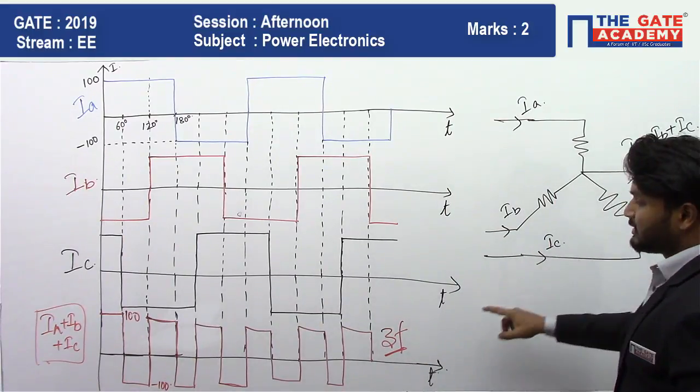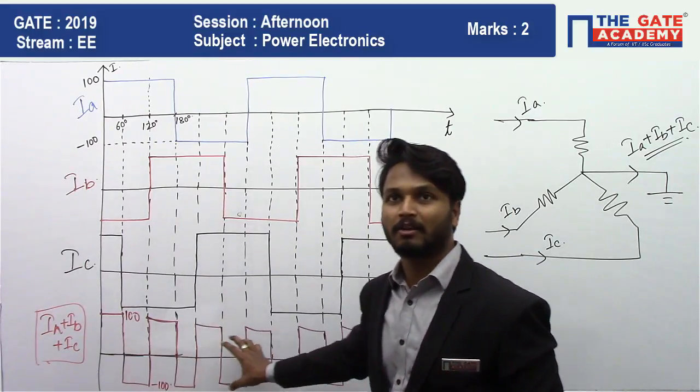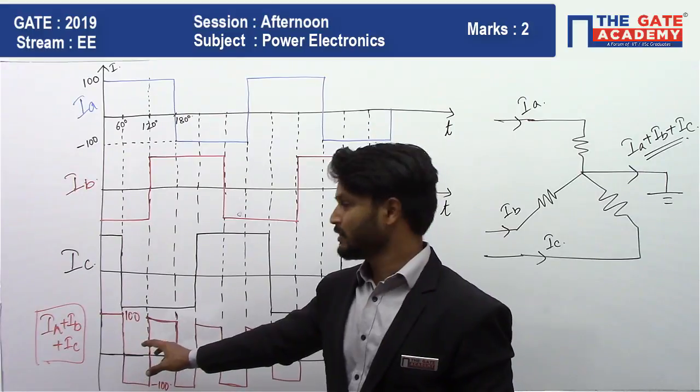Therefore, Ia plus Ib plus Ic is also a square wave. We have to calculate the RMS value of this square wave. We have to calculate the RMS value.